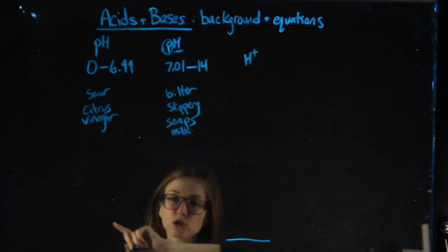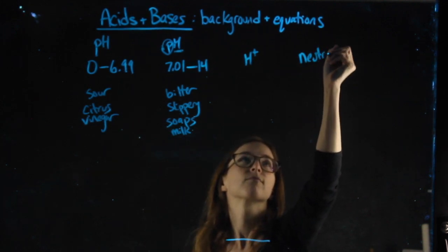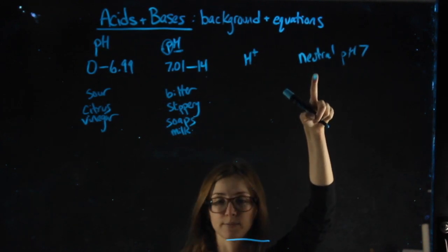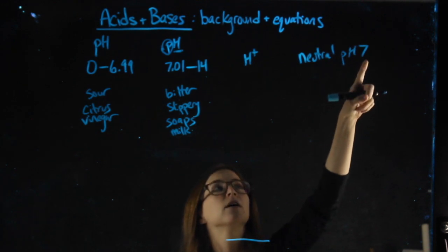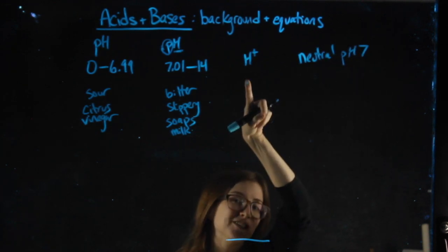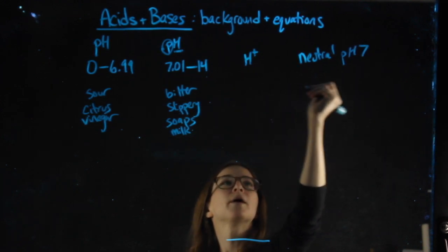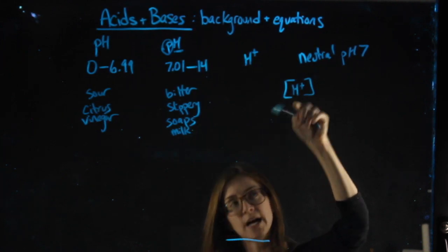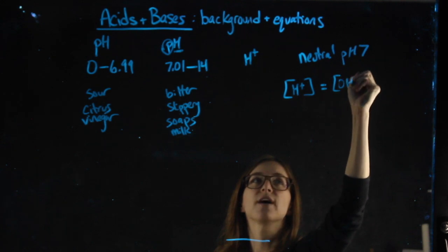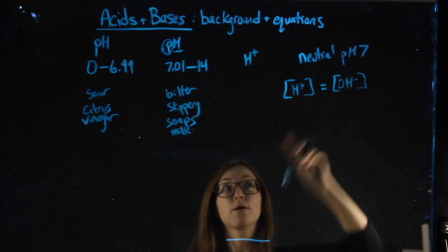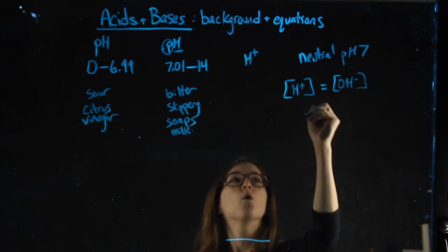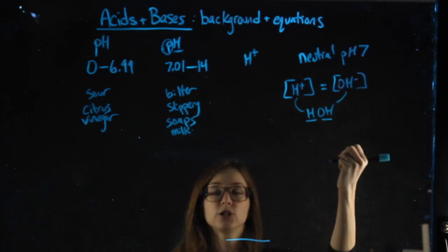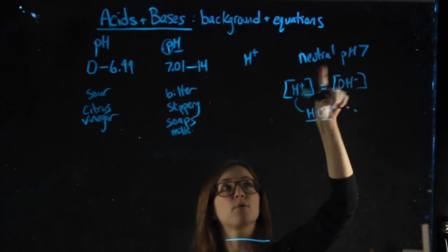So neutral is a pH of 7. Water is a classic example of something that's neutral, but it's not the only neutral substance out there. To have a pH of 7, it's not that there's no hydrogen ions in the solution. It's when our concentration, so the brackets mean concentration, when our concentration of hydrogen ions is equal to our concentration of hydroxide ions. So again, water is 7, water is H2O, or HOH. When we have equal parts H to OH, they cancel each other out and we end up with a neutral pH.